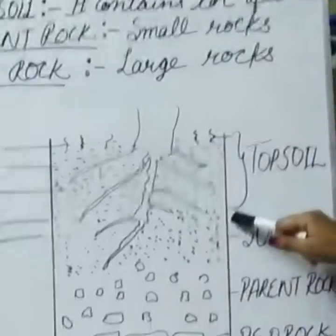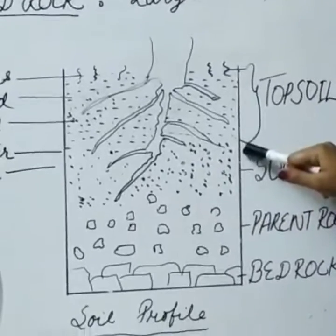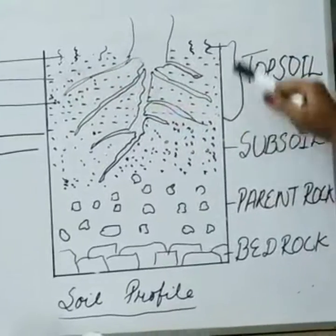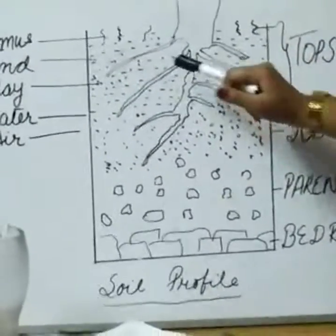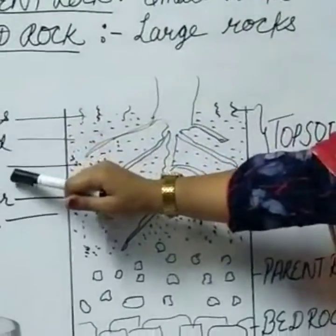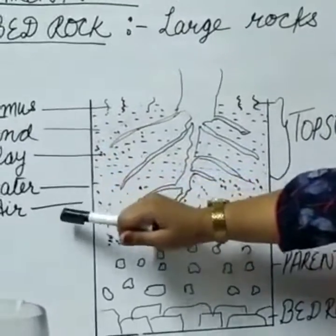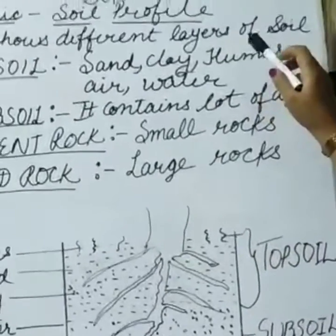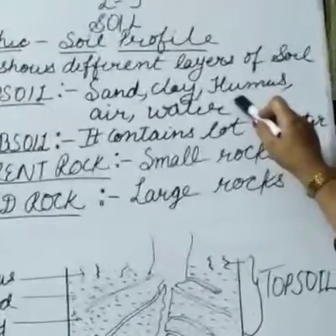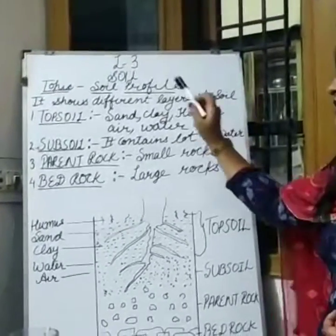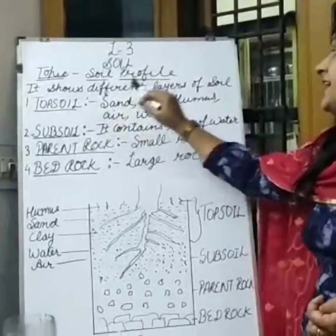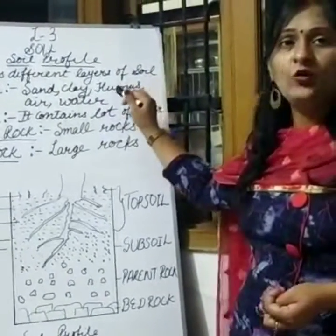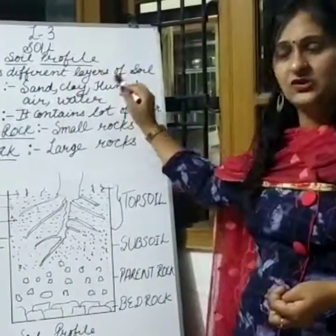See in this diagram — here this is the topsoil. Plants grow in this soil. It contains humus, sand, clay, water, and air. This soil is best for the growth of plants. Plants grow in this soil because this soil is rich in nutrients. All the nutrients are provided to plants by this soil.